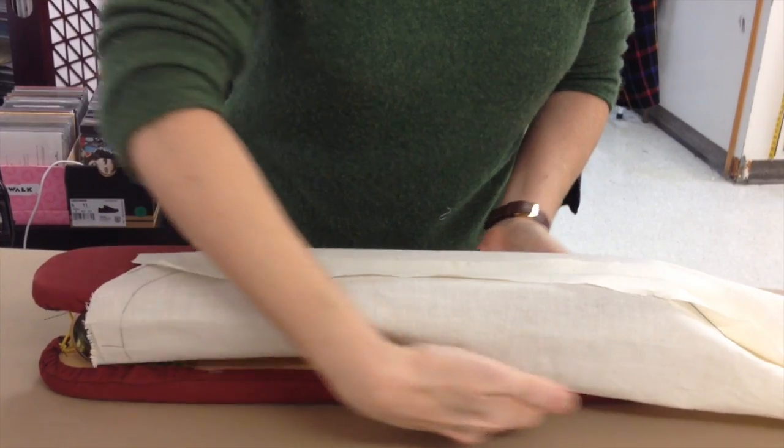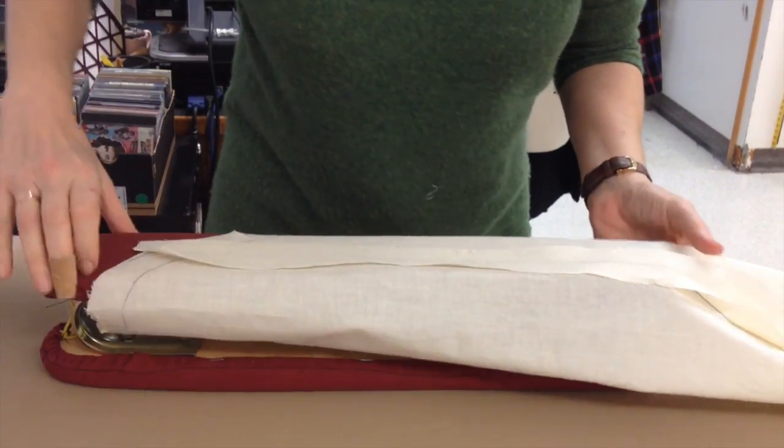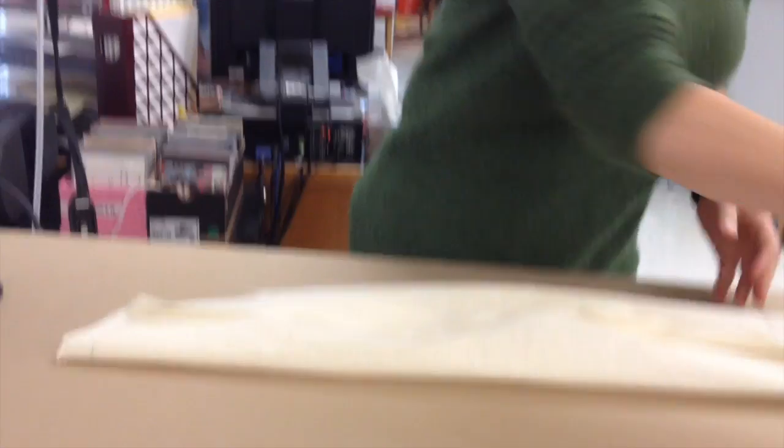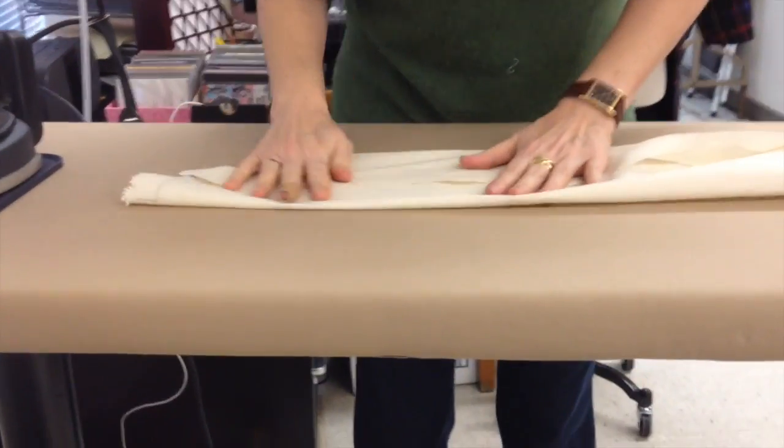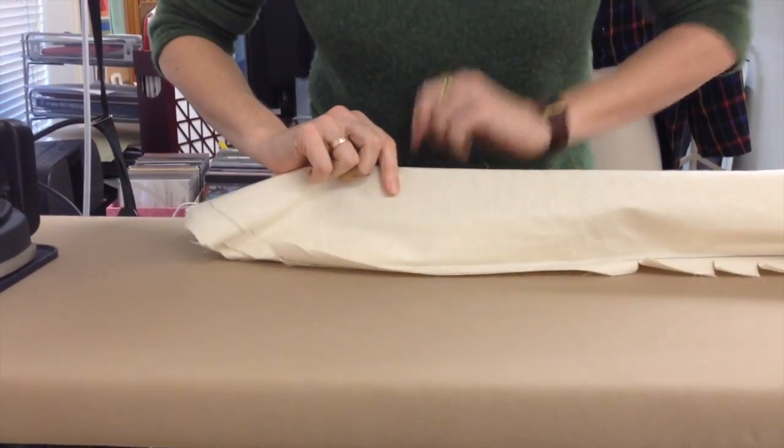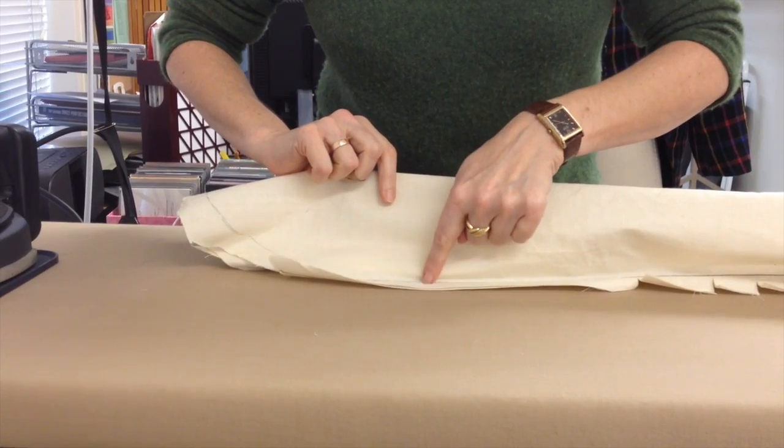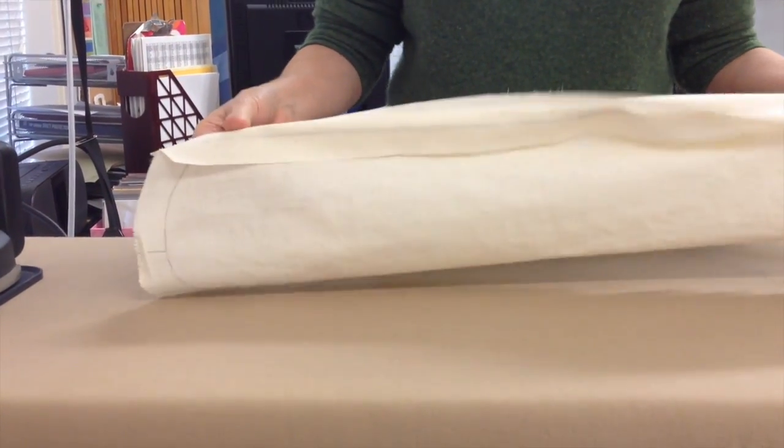And what that does, using the sleeve board raises and isolates the part that you want to be working on while you're not ironing on the underneath side. For example, if I were to try to do that without using the sleeve board, I could be ironing in wrinkles on the underneath side, so the sleeve board is very handy.